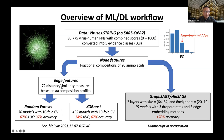Based on these features, we developed random forest and XGBoost models. For random forest, we optimized 36 models by grid search with stratified cross-validation, and 432 models for XGBoost with the same validation strategy. In short, we obtain up to 67% AUC and 37% accuracy for the random forest case, and 74% AUC and 67% accuracy for the XGBoost case.